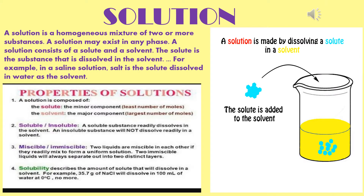What is a solution? A solution is a homogeneous mixture of two or more substances. A solution may exist in any phase. A solution consists of a solute and a solvent. The solute is the substance that is dissolved in the solvent. For example, in a saline solution, salt is the solute dissolved in water as the solvent.